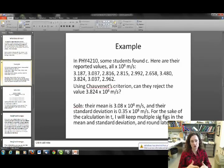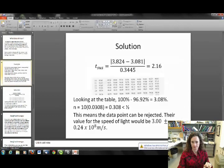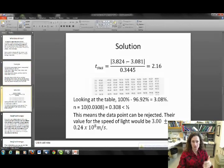Now I kept a few more digits in t to reduce rounding error. When you report it though, remember, you only keep one, at most two, sig figs in your uncertainty, and you round later. So here's t. I kept multiple digits. It's the 3.824 minus my mean, which is 3.081, absolute value of that, and then divide it by my standard deviation. And I got t is equal to 2.16.